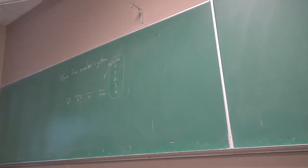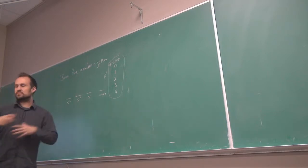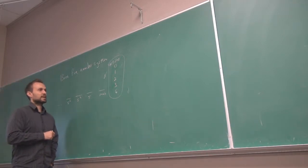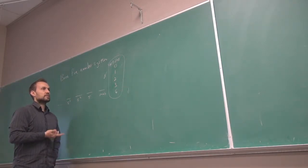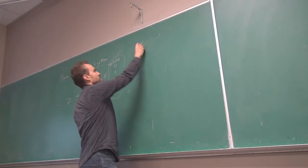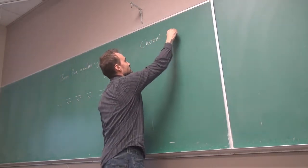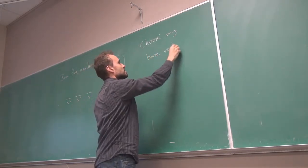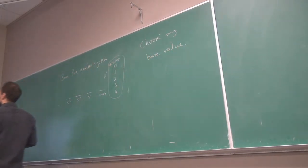Nothing prevents us from looking at another group size. Why 5? The 5 came from African tribes, but there's no reason it has to be 5. The Babylonians chose 60 — a little high, but we can choose any base number. What about 6? What about 8?